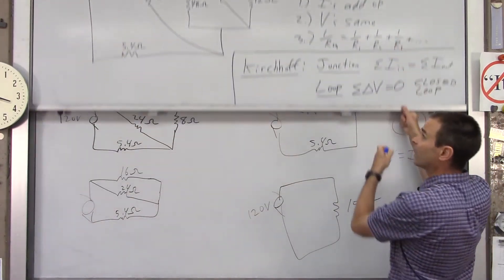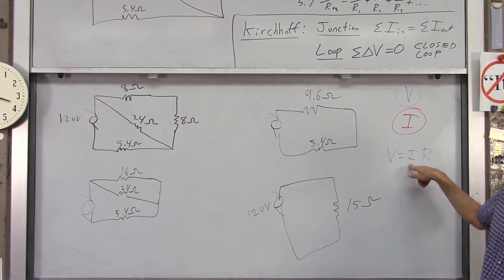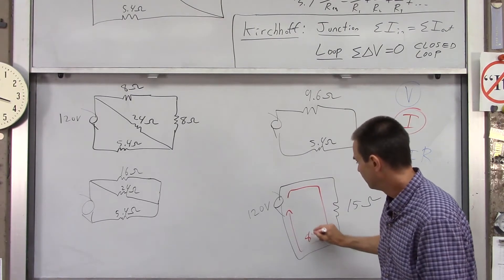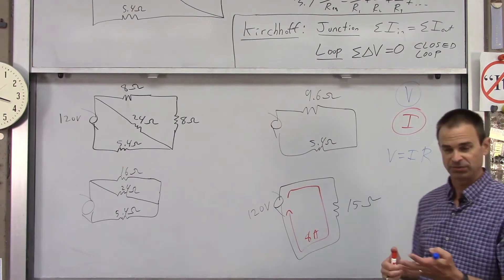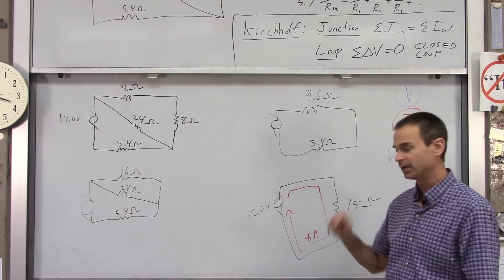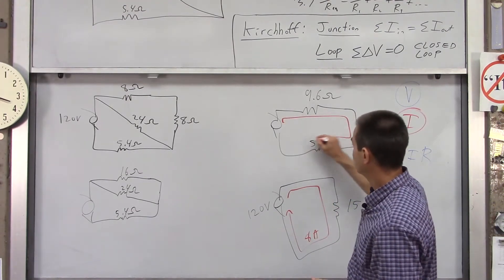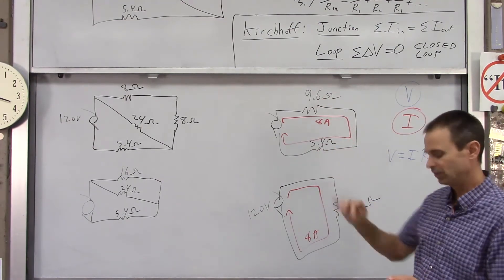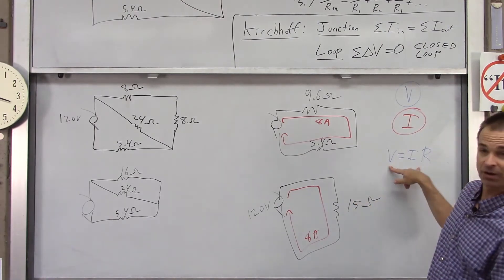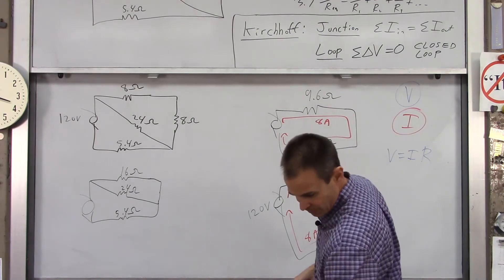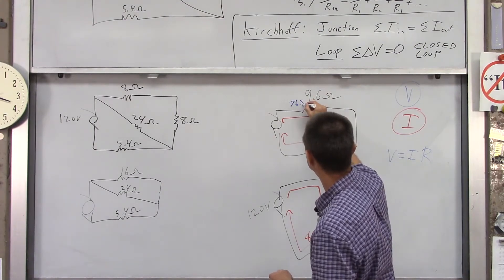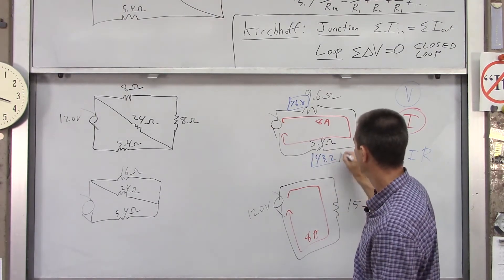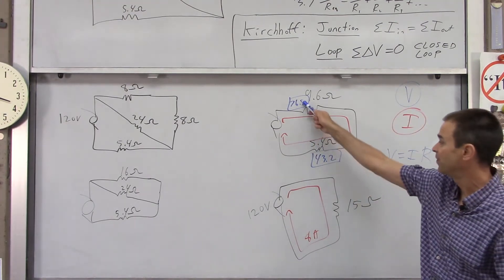Using V = IR: 120 volts divided by 15 ohms gives a total current of 8 amps. This 8-amp current flows through the whole simplified circuit. To find voltage drops, we use Ohm's law again: 8 × 9.6 = 76.8 volts across the parallel combination, and 8 × 5.4 = 43.2 volts across the 5.4-ohm resistor. Adding those gives 120 volts, confirming Kirchhoff's loop rule.